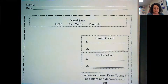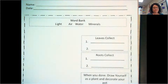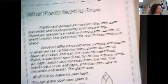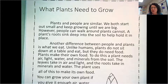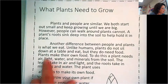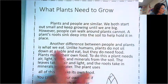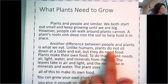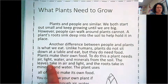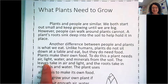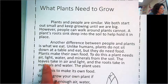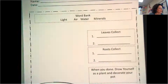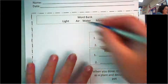The first question is: what do leaves collect? Let's go back and look in our passage. I'm going to scan and look for the magic word 'leaves,' because that's what the question is asking. There it is — I found my word after I skimmed it. I'm going to read around it: 'The leaves take in air and light.' So what do leaves collect? Air and light.